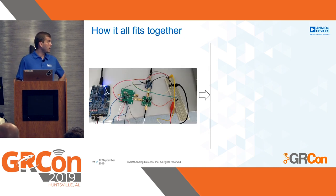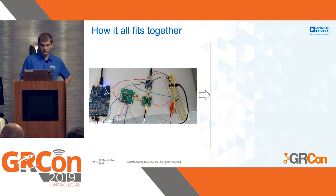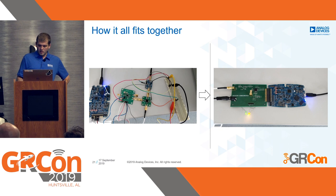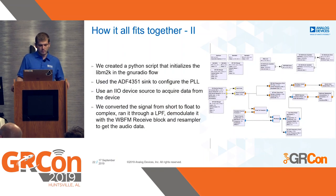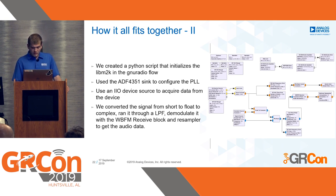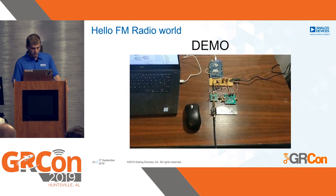Here's how it all fits together. Initially we experimented with a board that had all the components together, and eventually created a more integrated, robust version for FM reception. In GNU Radio, we created a Python script to initialize LibM2K, used the ADF4351 block to configure the PLL, and used the IIO device source block to get analog data from the device into the GNU Radio flow. Then we used a bunch of signal processing blocks to demodulate the data and send it to an audio sink.